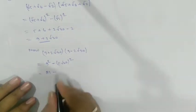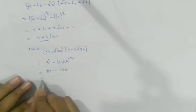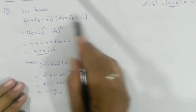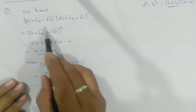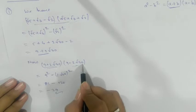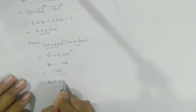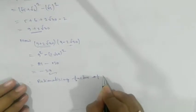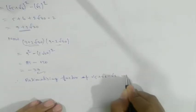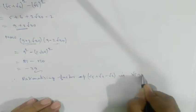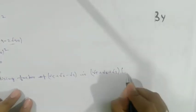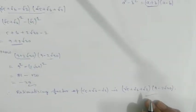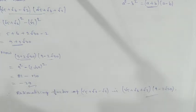This gives us 81 - 120 = -13, which is your rational number. So you multiplied step by step: therefore the rationalizing factor of √5 + √6 - √2 is (√5 + √6 + √2) multiplied by (9 - 2√30). This is your answer.